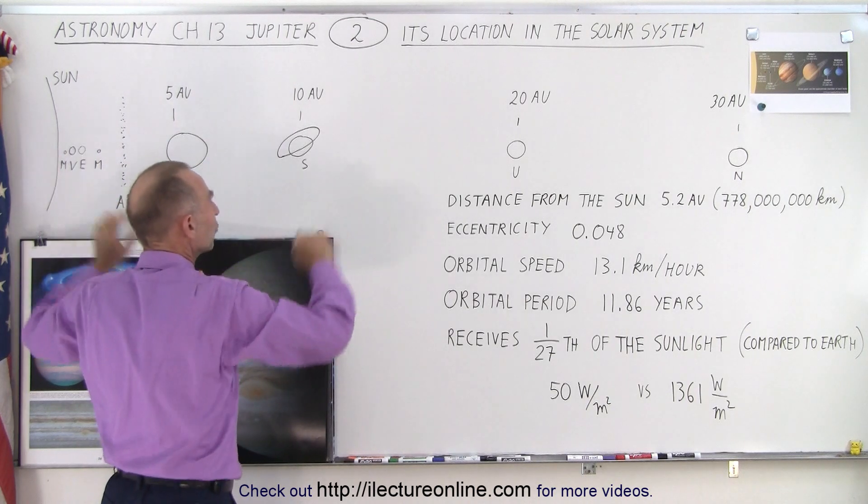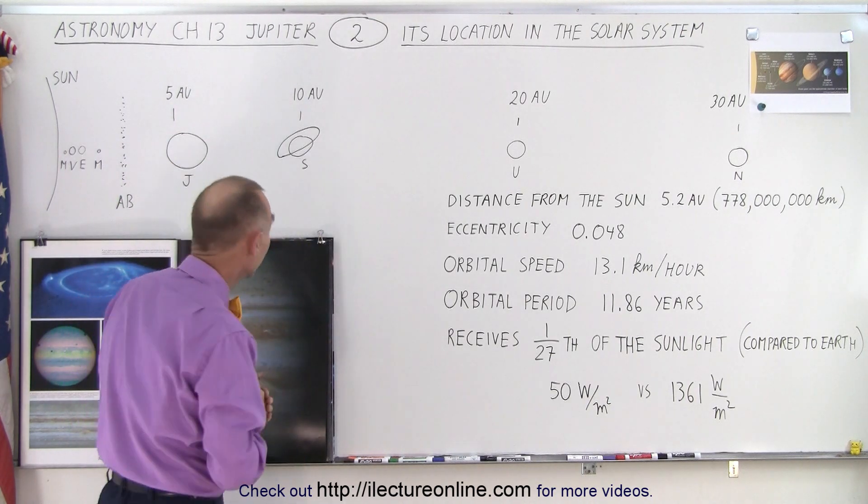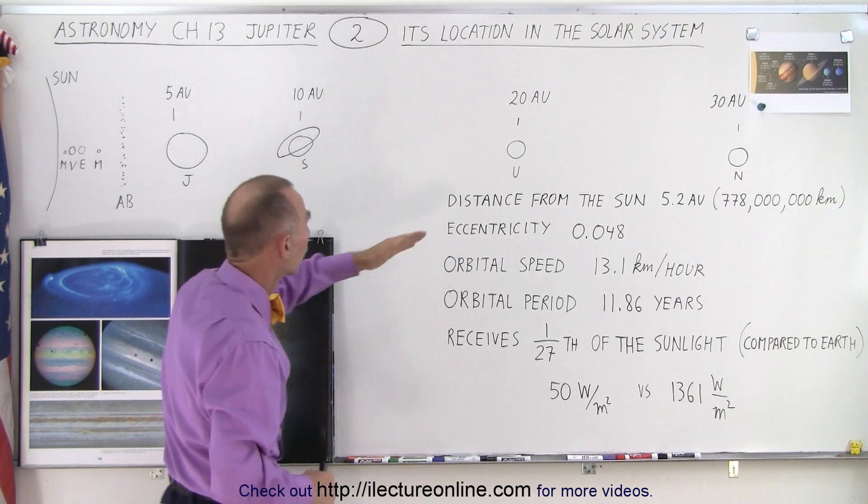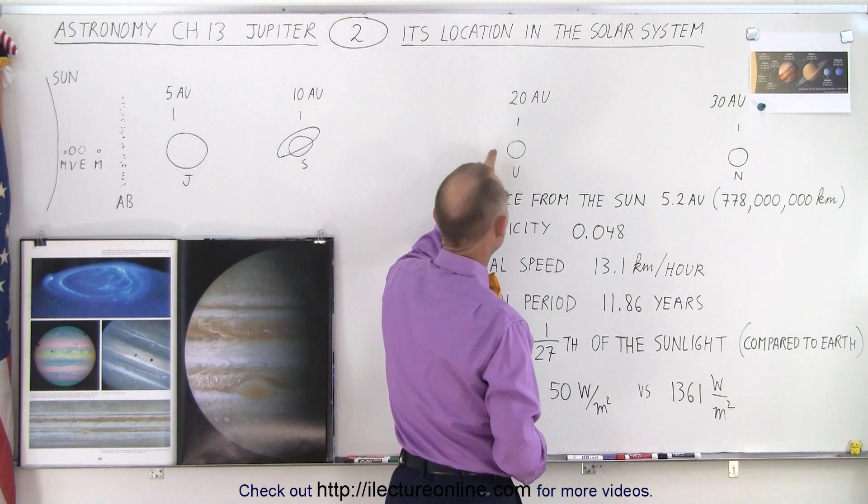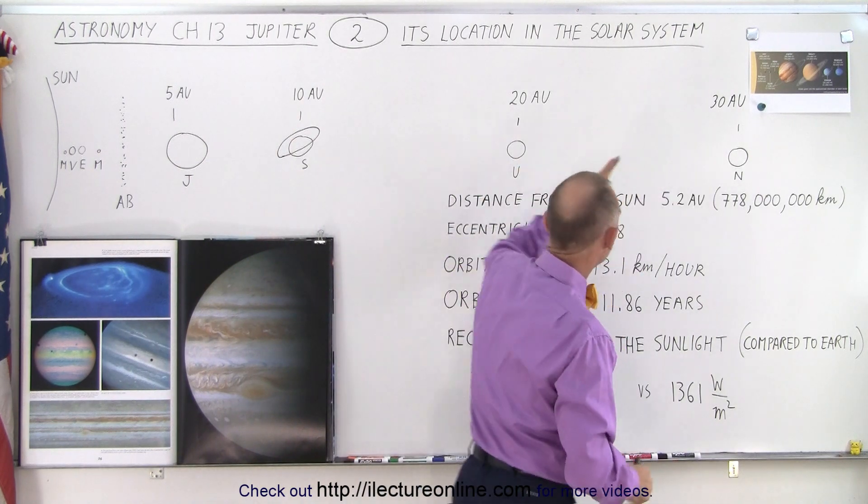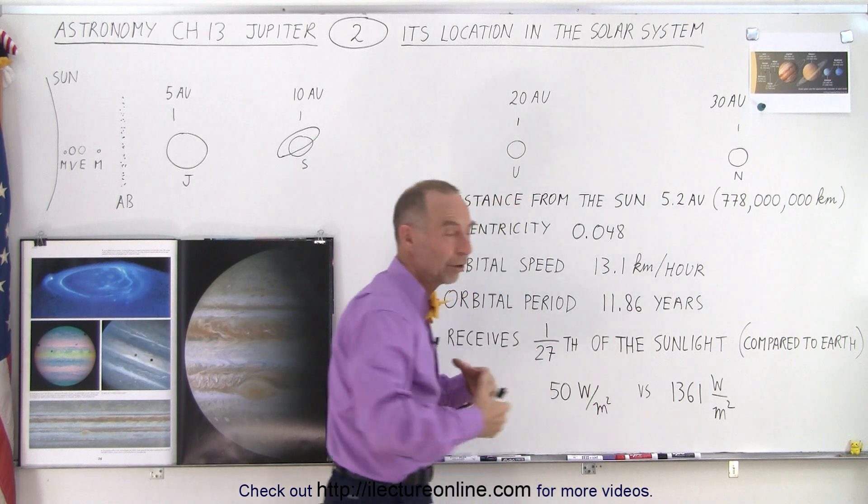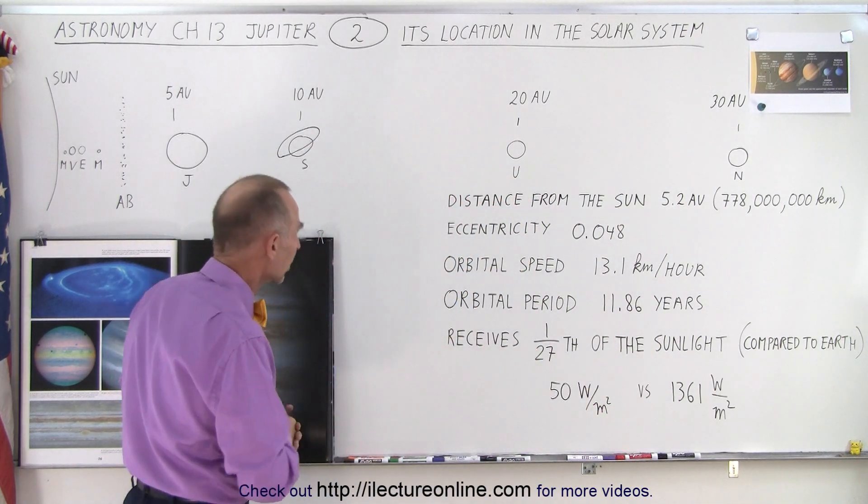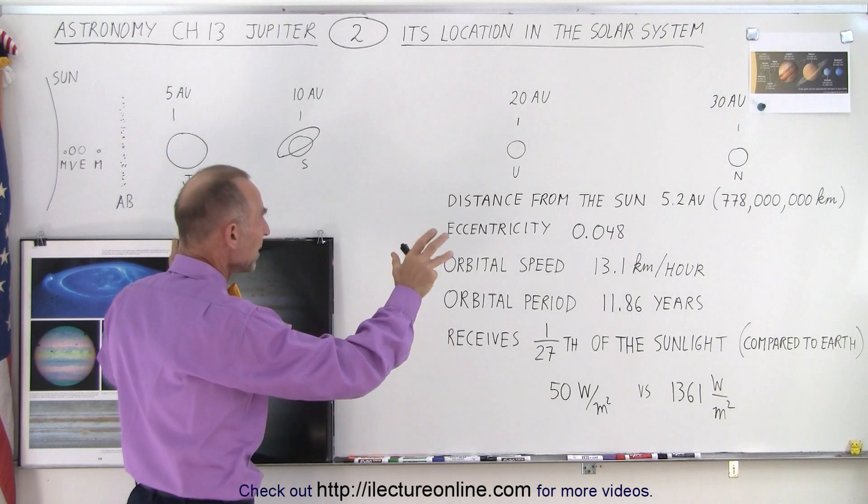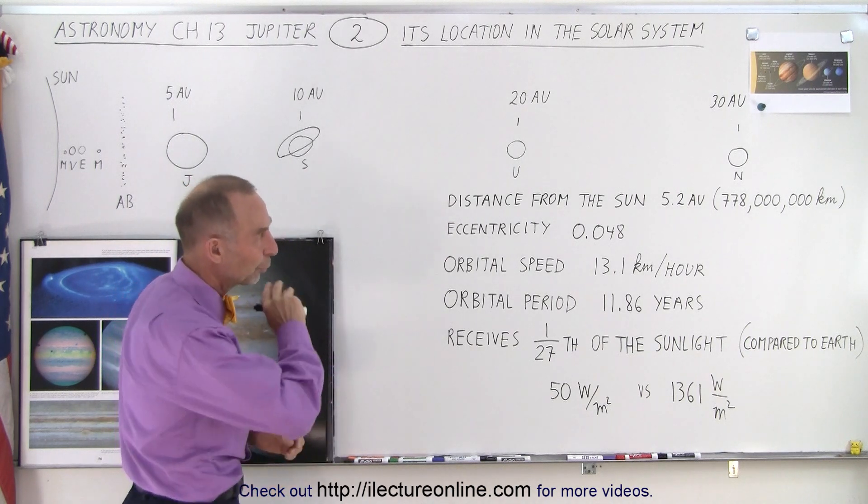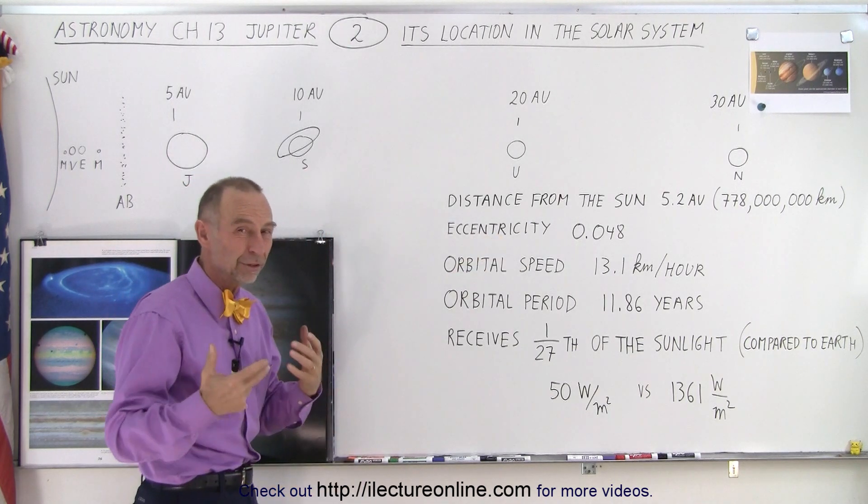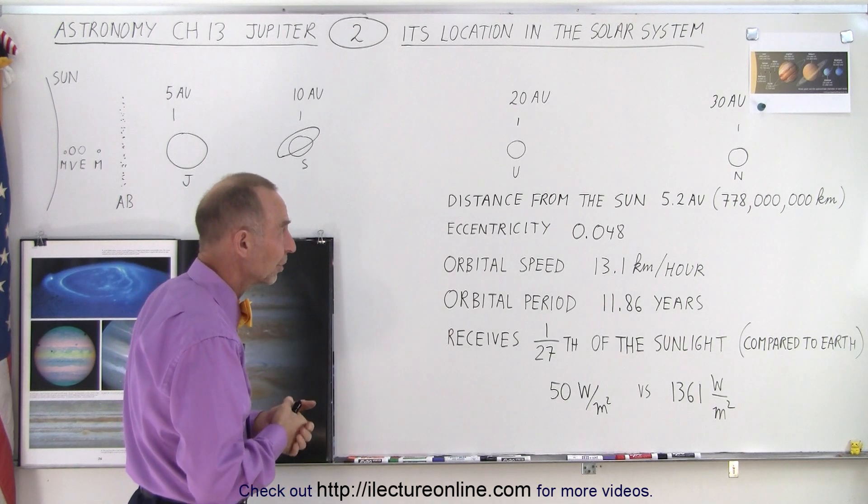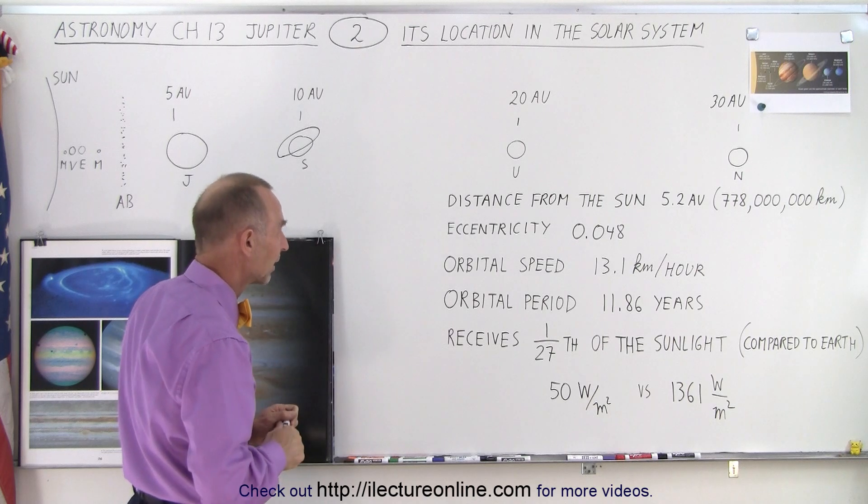The biggest of them all, again much bigger than all the other planets combined. Then twice the distance almost we have Saturn. Four times the distance we have Uranus, and six times the distance compared to Jupiter we have Neptune. So notice these are large planets, very far spaced apart from one another. All of them made out of gaseous materials, although the ones that are further out, because of the enormously cold conditions out there, they do have some different consistencies and we'll talk about that.